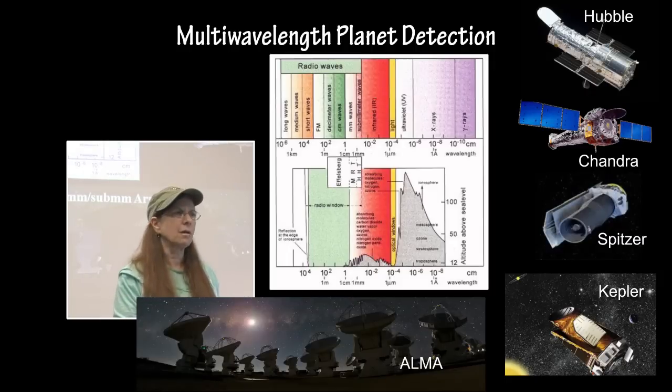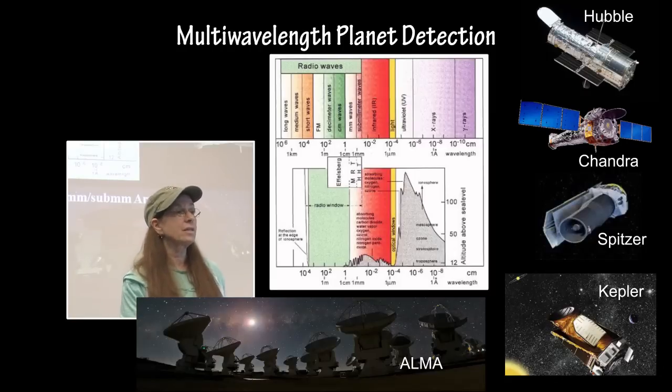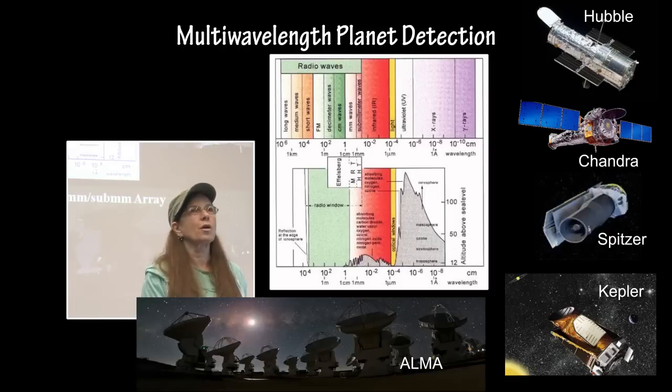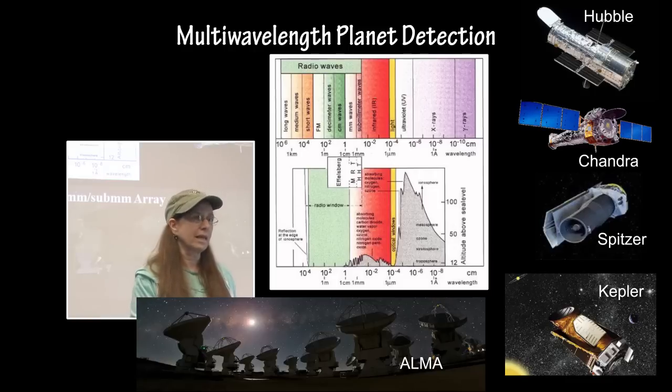Spitzer was the first mission to actually detect an exoplanet and was the first to detect temperature and winds in the composition of an atmosphere around an exoplanet. Kepler detected more than 4,000 possibilities, and more than 1,000 of those have been confirmed as exoplanets.